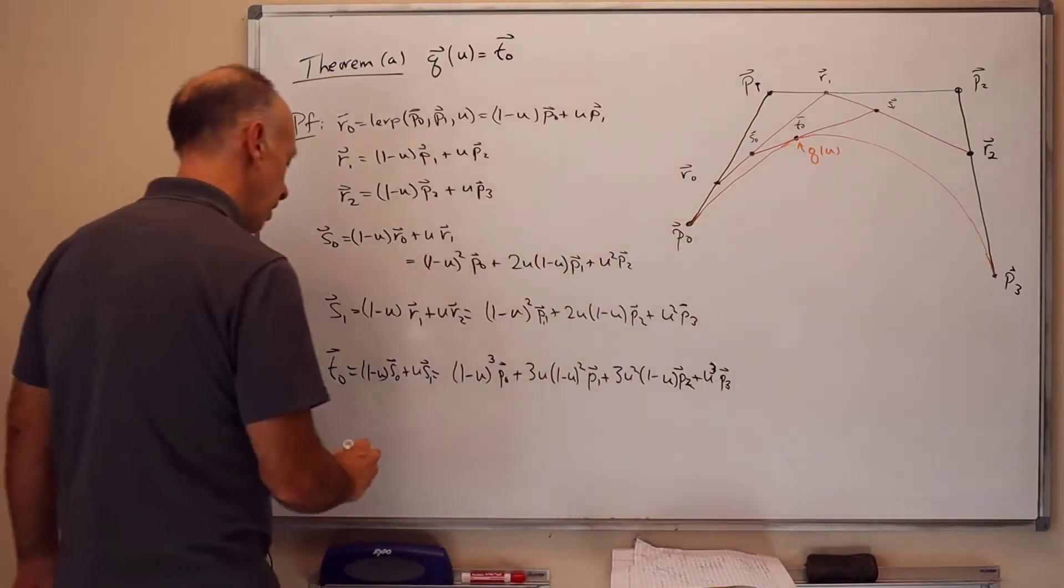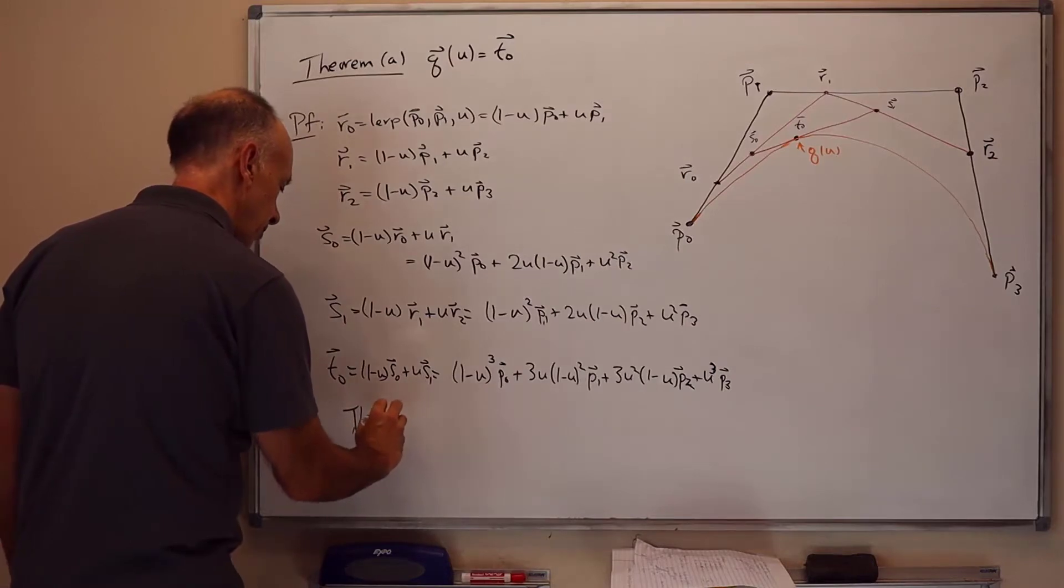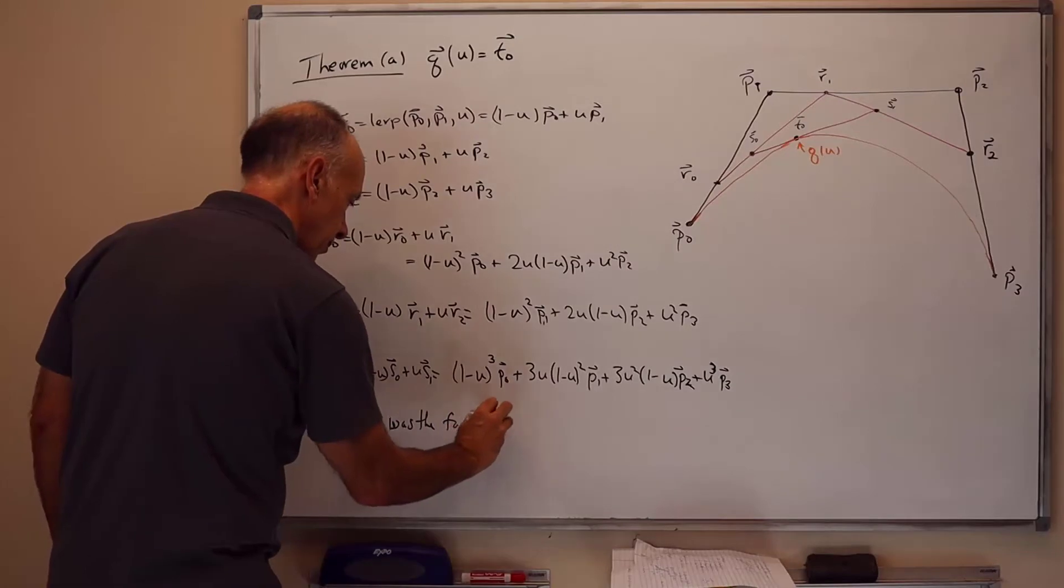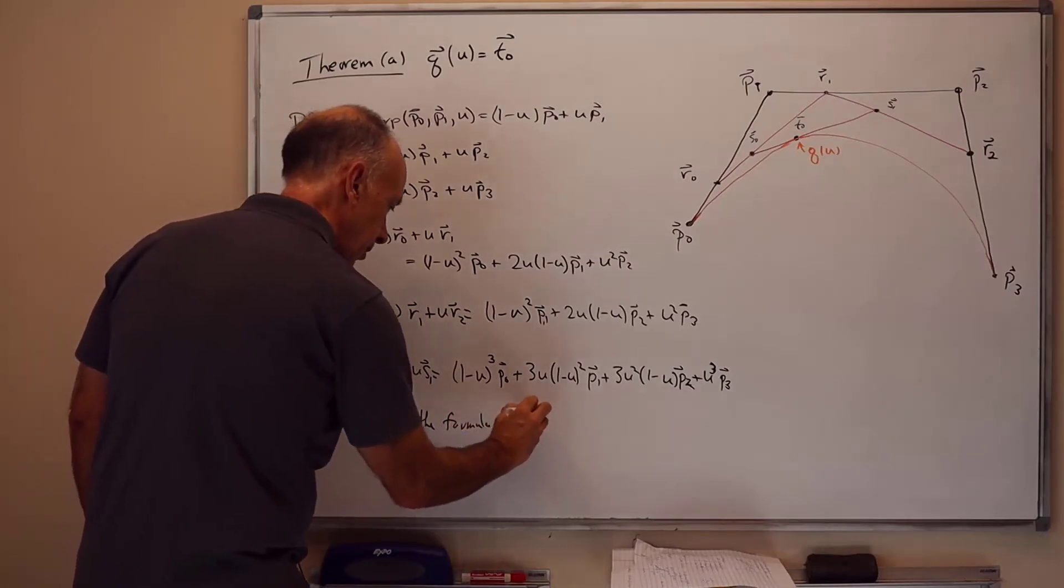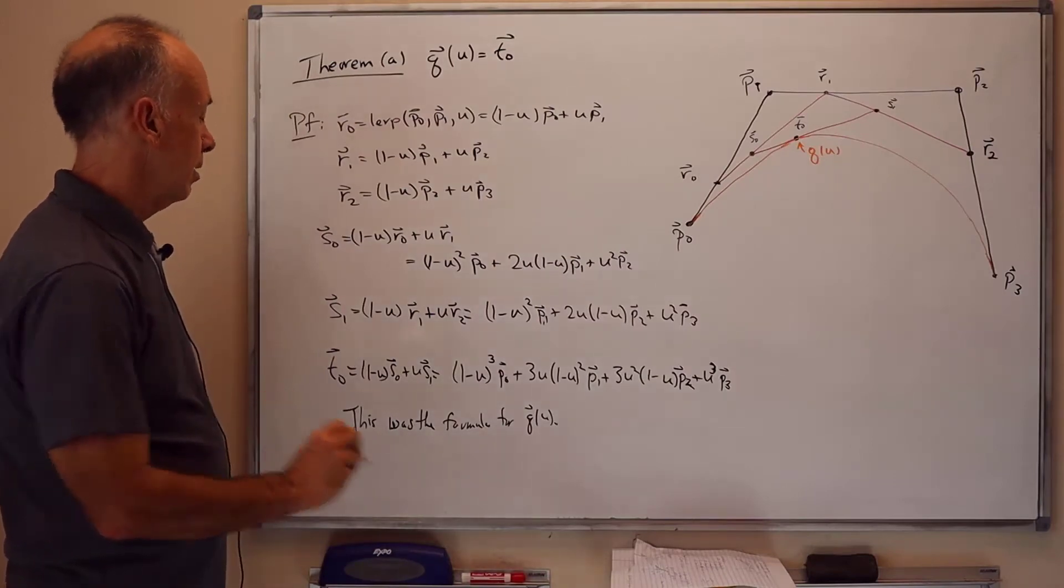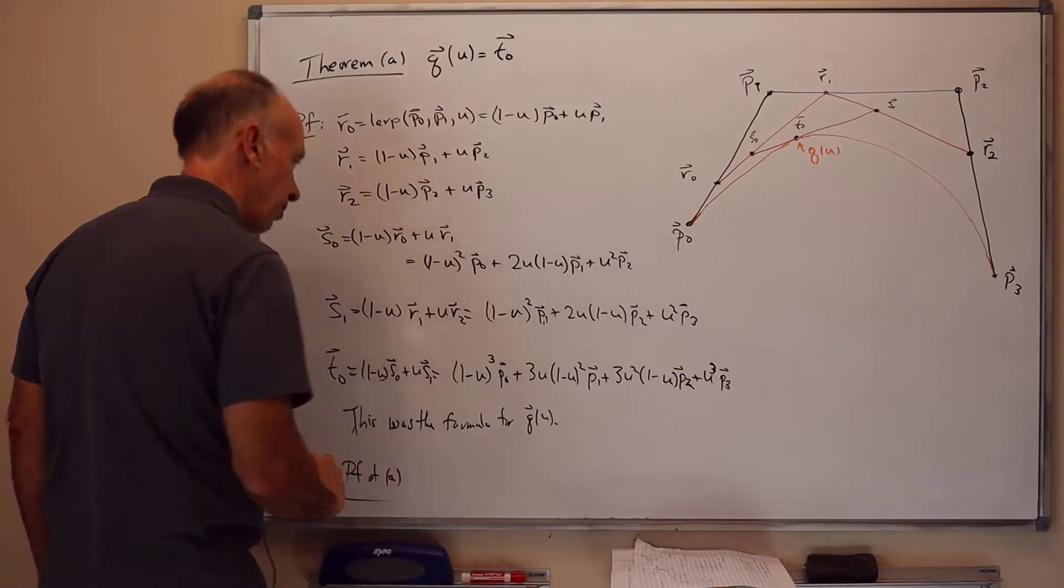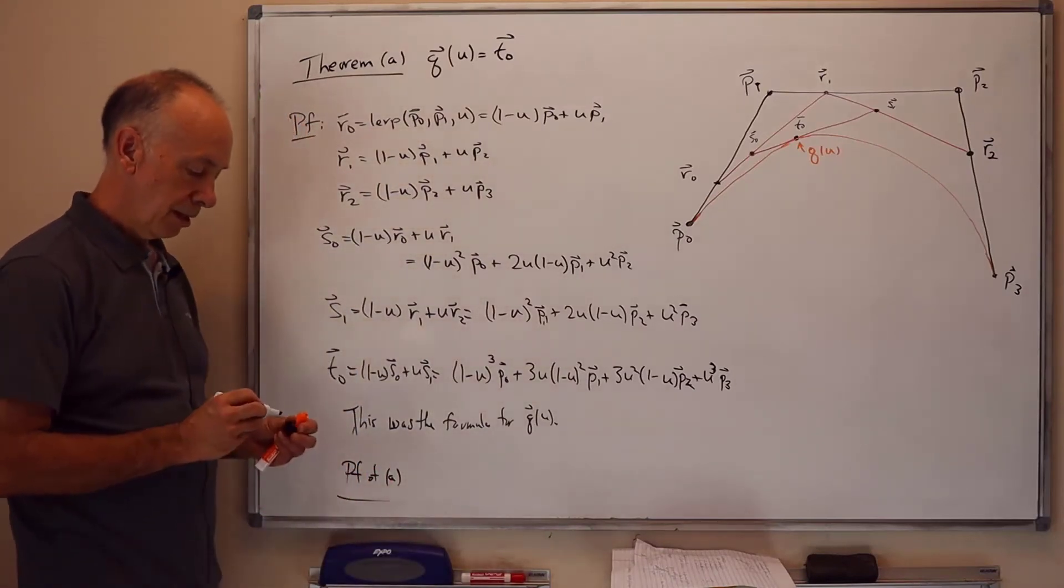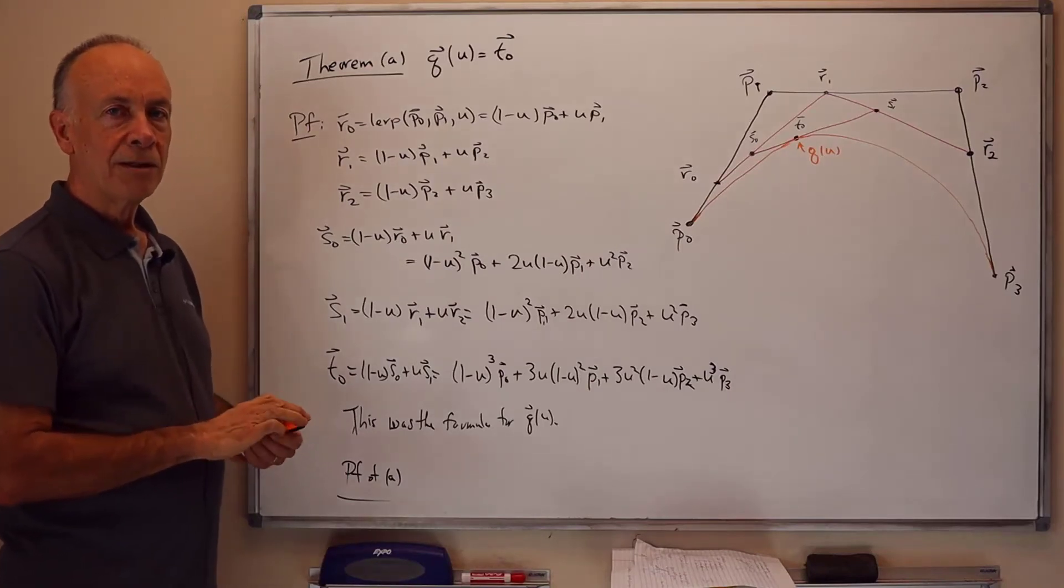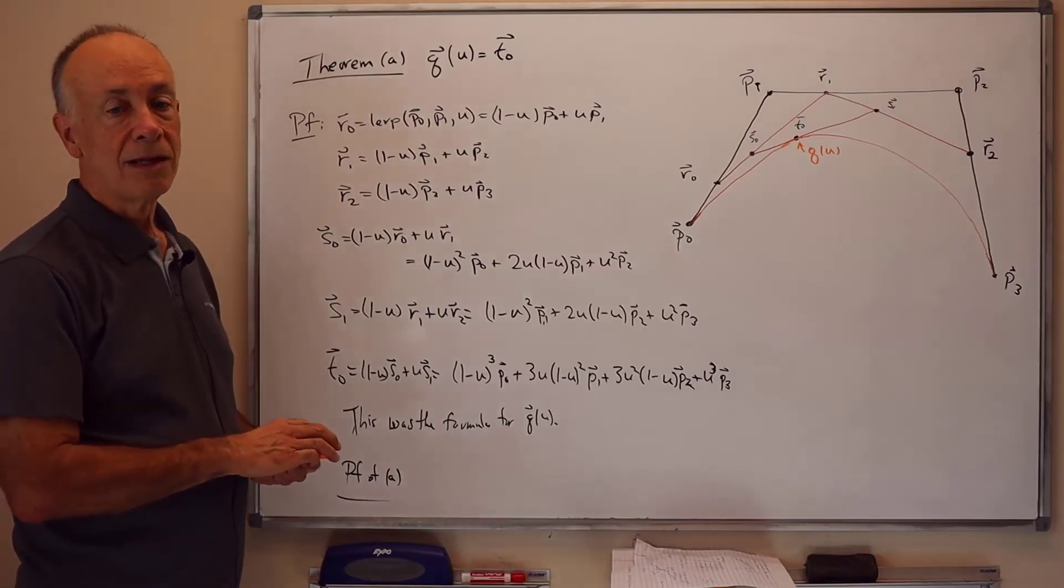And this was the formula for Q of U, the formula we gave back in the previous video. So that proves part A of the theorem. Part B of the theorem, I'm not going to give you a proof, but it's straightforward to compute it. And that's the end of this presentation. Thank you very much.